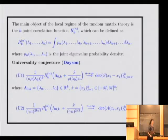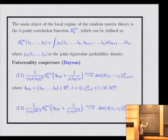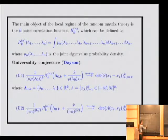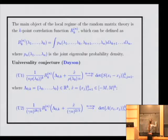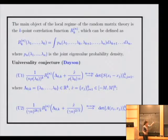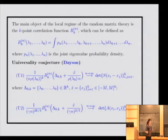Usually we consider two cases of universality. The first case is the universality in the bulk of the spectrum — near points where ρ is not equal to zero. The second case is at the edge of the spectrum, where ρ equals zero but behaves like a square root with some coefficient when x tends to λ_0. In random matrix theory, when we speak about universality, we usually mean the universality of the correlation function.